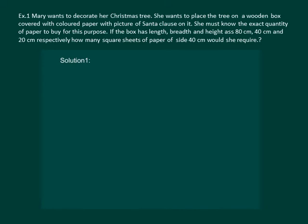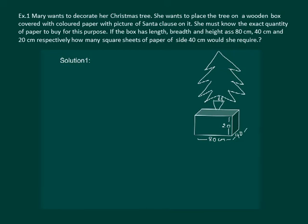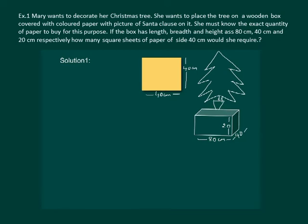Let us read the question. Mary wants to decorate her Christmas tree. She wants to place the tree on a wooden box covered with coloured paper with a picture of Santa Claus on it. She must know the exact quantity of paper to buy. If the box has length, breadth and height of 80 cm, 40 cm and 20 cm respectively, how many square sheets of paper of side 40 cm should be required? Since Mary wants to paste the paper on the outer surface, the quantity of paper required equals the surface area of the box, which is in the shape of a cuboid.